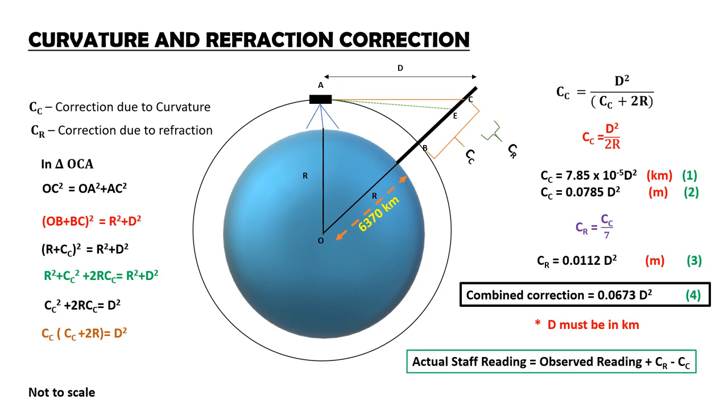If you need actual staff reading, then it is given by observed staff reading plus CR minus CC.